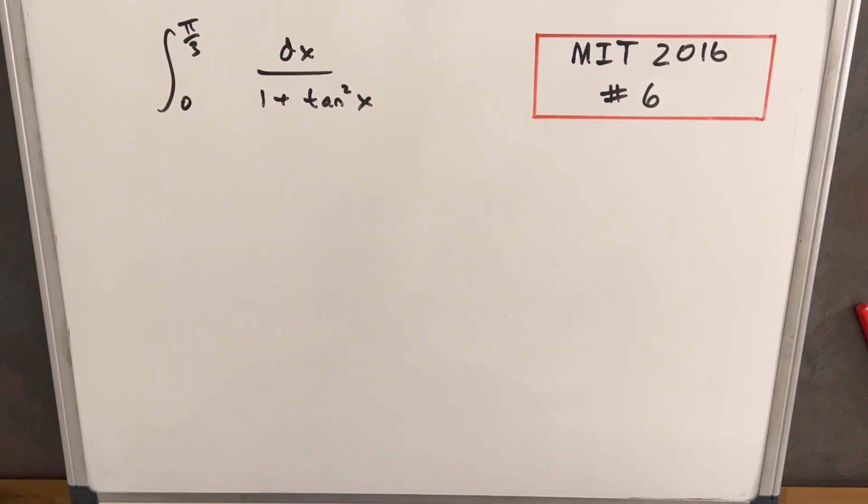Hey, we have here a problem from MIT Integration B 2016. This is problem number six. We have the integral from pi over three to zero of dx over one plus tan squared x.